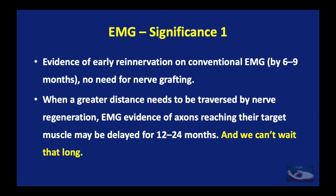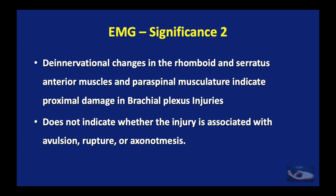To summarize the EMG findings: the motor unit action potential in a normally innervated muscle, positive spike waves and fibrillation potentials in denervated muscles, and nascent potentials in the re-innervating muscle. The clinical significance is that evidence of early re-innervation on conventional EMG by about 6 to 9 months can obviate the need for nerve surgery, but this should be considered only after accounting for the length of nerve that needs to regenerate. In brachial plexus injuries, denervation changes in the rhomboid and serratus anterior muscles along with the paraspinal musculature indicate proximal damage, but do not specify whether the injury involves avulsion, rupture, or axonotmesis.